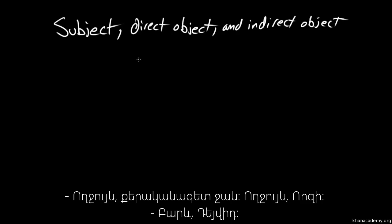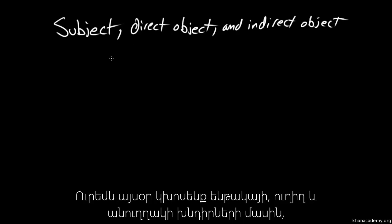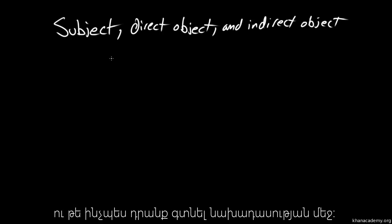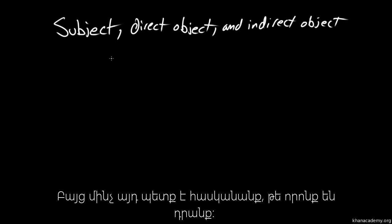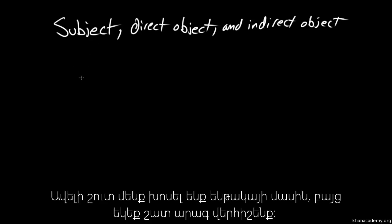Hello grammarians, hello Rosie. Hi David. So today we're gonna be talking about subject, direct object, and indirect object, identifying those within a sentence. But first I suppose we should figure out what those things are. So we've talked about what subjects are before, but let's review it again really quickly.